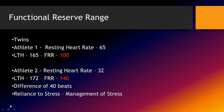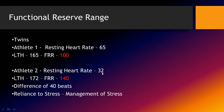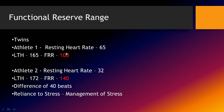I first want you to understand my definition of functional reserve range of the heart rate. Let's say we have two twins: one has a resting heart rate of 65 and the other has a resting heart rate of 32. If they both take the lactate threshold test and their lactate threshold is 165 for the first athlete and 172 for the second, the functional reserve range is 100 for athlete one and 140 for athlete two — a difference of 40 beats.